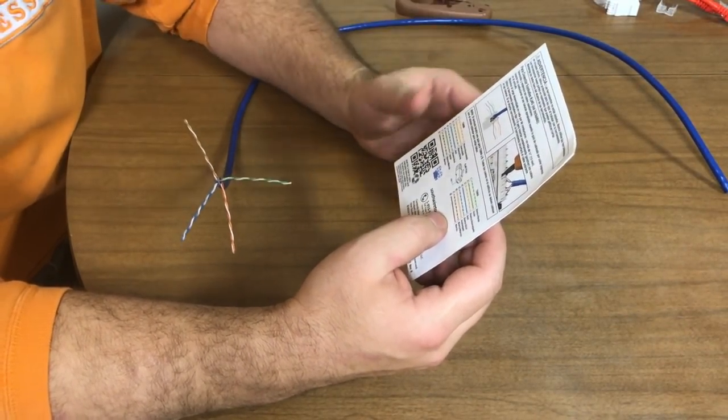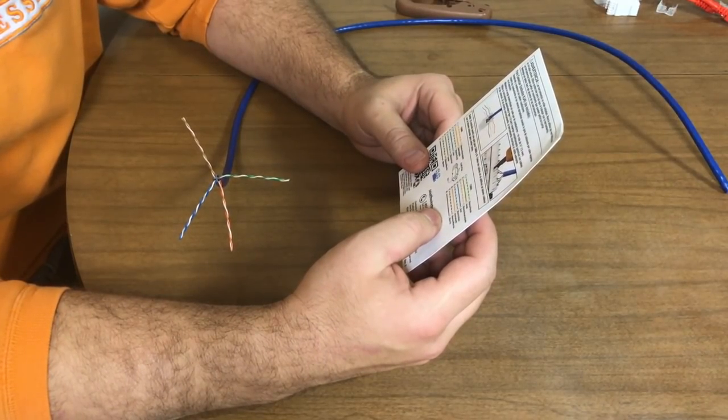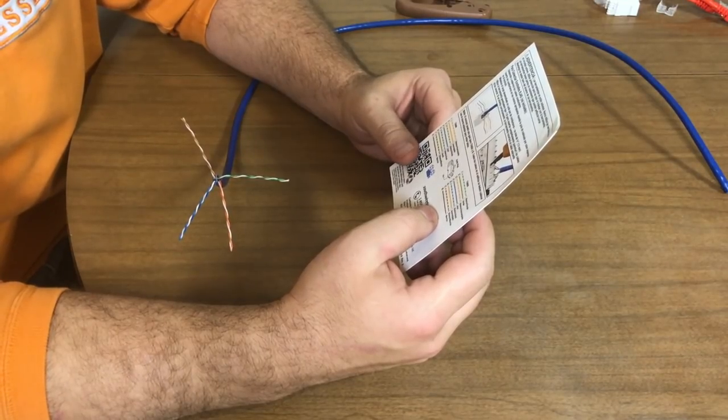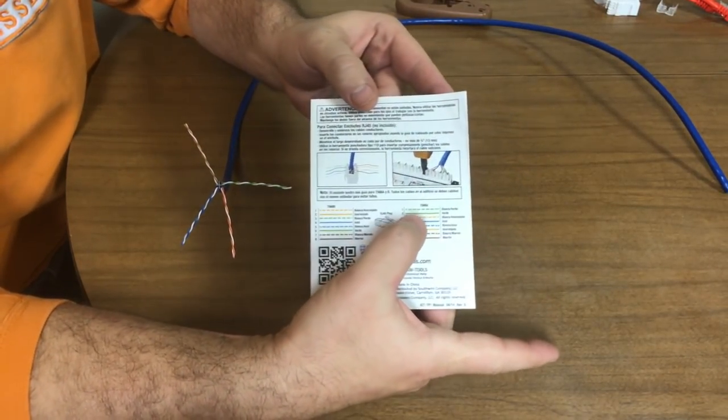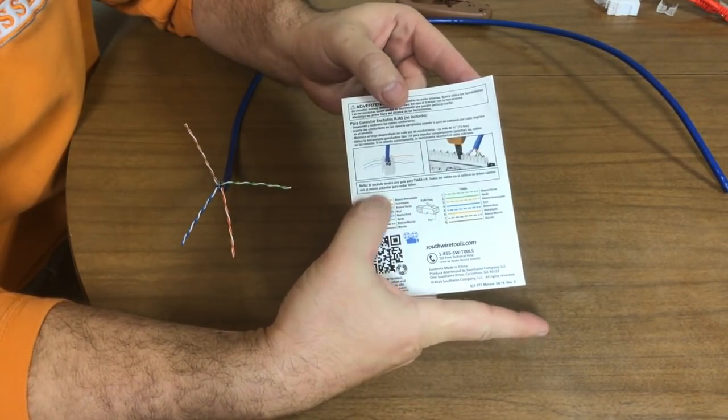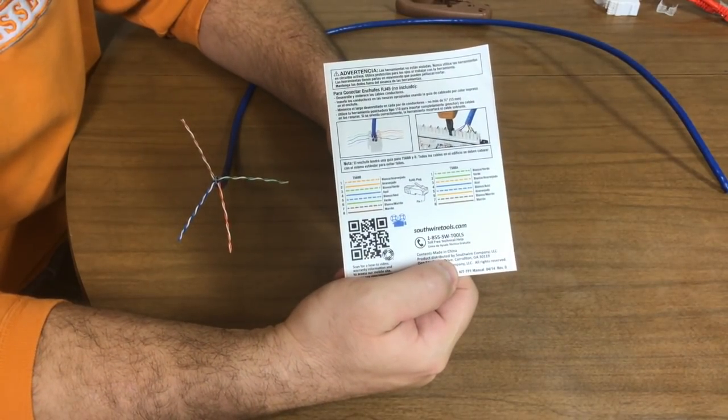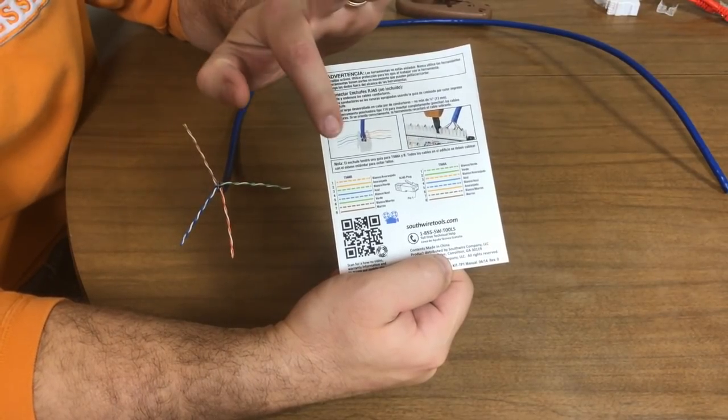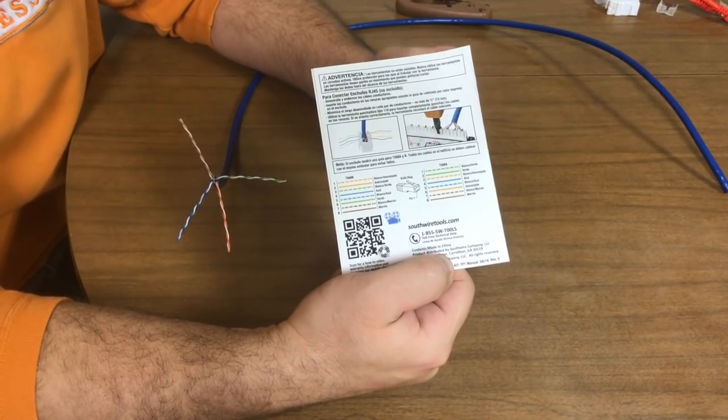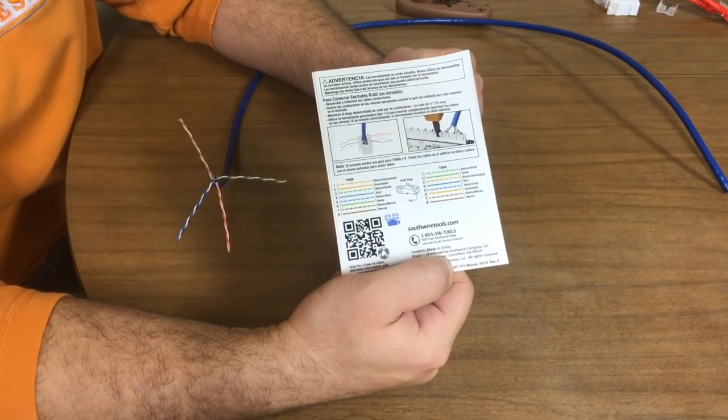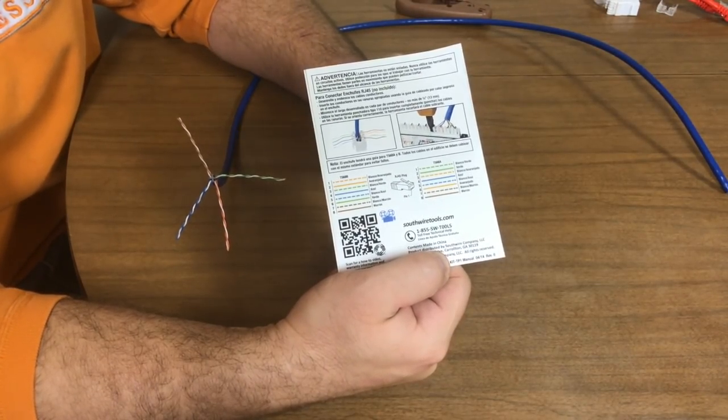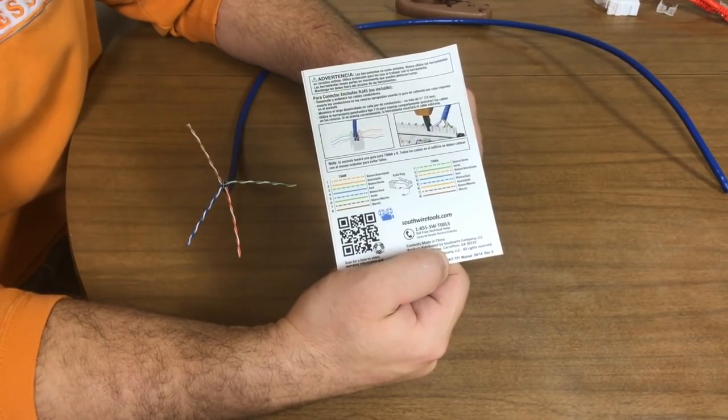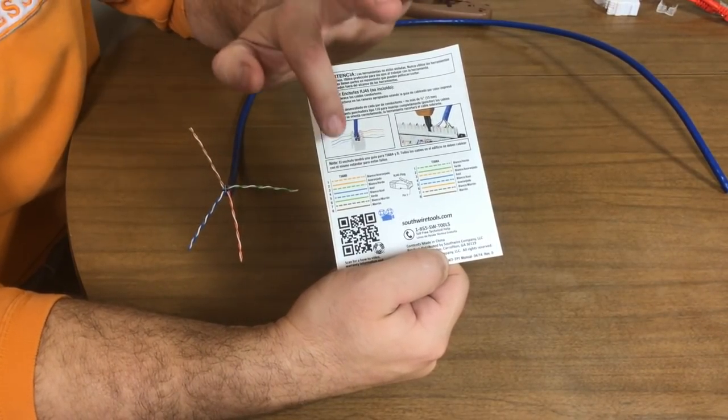Now before we can wire this, we need to figure out what wiring scheme we're going to use. In data communications and networking, there are two standards. There is an A standard and a B standard and the wiring is just a little bit different for both. Now 90% of everybody out there uses the B standard. Now you can use the A standard, but you're going to have to wire your entire house and every data line coming in to the A standard to make it work. So I highly recommend using the B standard.